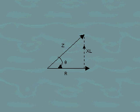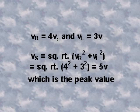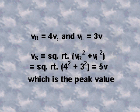Let's look at an example. A series circuit consists of a resistor and an inductive reactance. Calculate the peak value of the total voltage when the peak values of the two components are V sub R equals 4 volts and V sub L equals 3 volts. V sub S equals the square root of V sub R squared plus V sub L squared or the square root of 4 squared plus 3 squared equals 5 volts, which is the peak value.